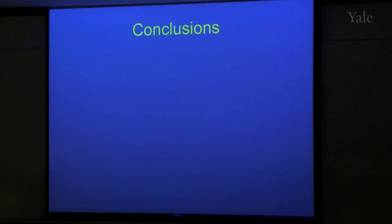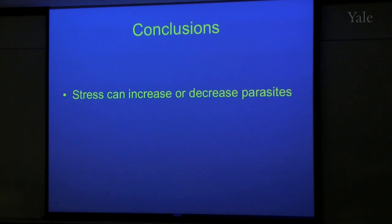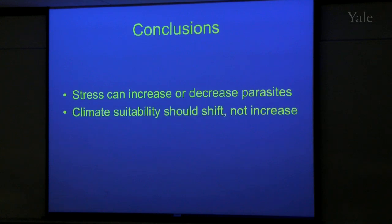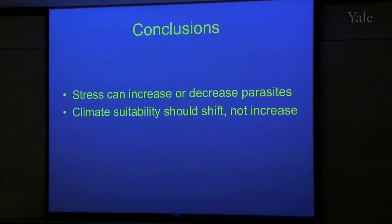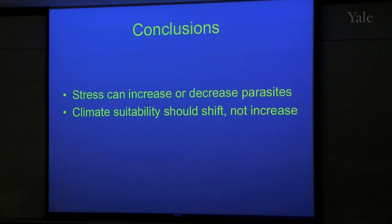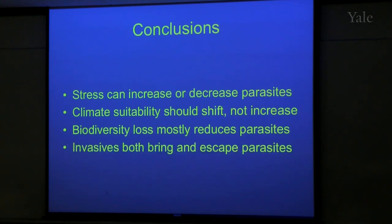Let me conclude with the following points. First, stress can increase or decrease parasites — this is really important to consider at the population level. Second, climate change should shift but not necessarily increase the distribution of infectious disease — fairly contrary to what tends to be reported in the literature. Even when climate becomes more suitable for infectious diseases, other important factors like economics may overshadow those climate effects. Third, we hypothesize that biodiversity loss mostly reduces parasites — exactly the opposite of what you'll find in most of the conservation biology literature. And finally, invasive species both bring and escape parasites, and both phenomena are problematic in terms of conservation biology. Thank you.